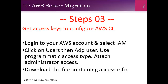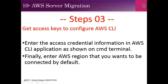To configure the AWS CLI it will ask for the access key and secret access key. To get those keys we need to create a user with programmatic access. At the time of user creation it will give the option to download the credential information. When we configure the AWS CLI on our terminal it will ask for the access key, secret access key, and AWS region.